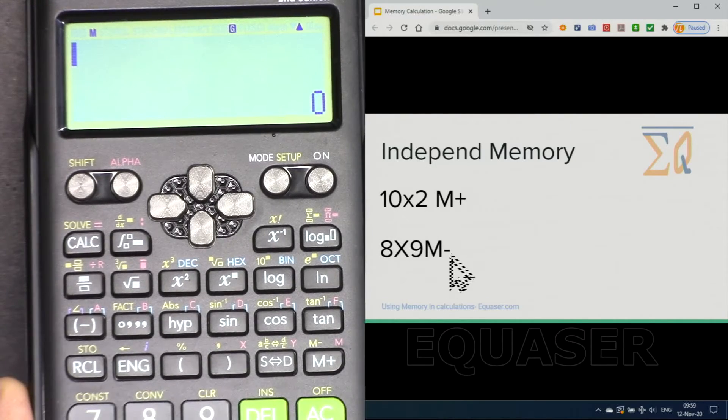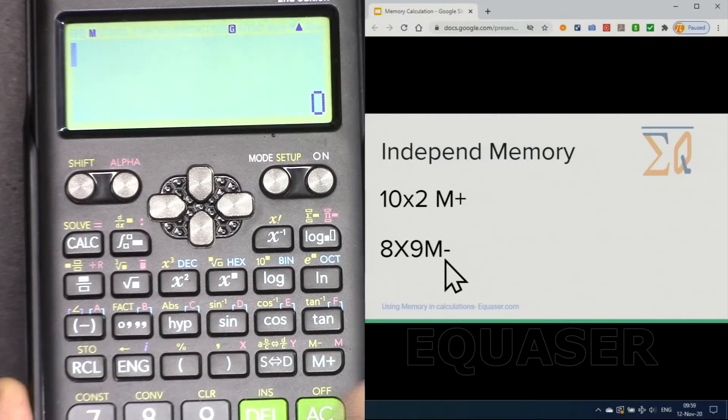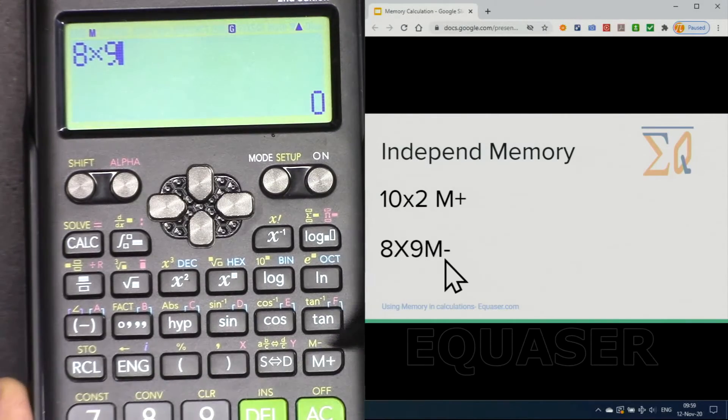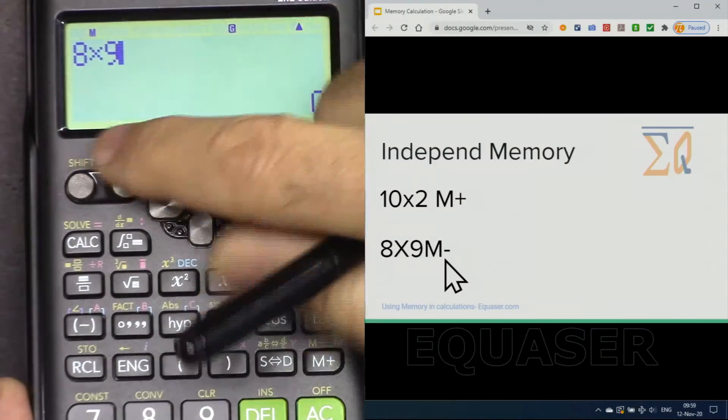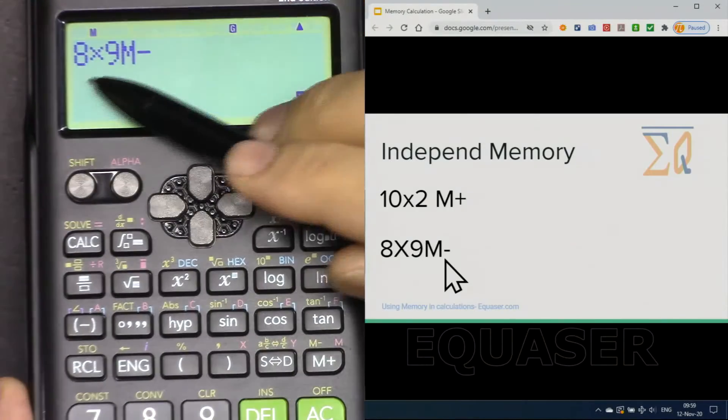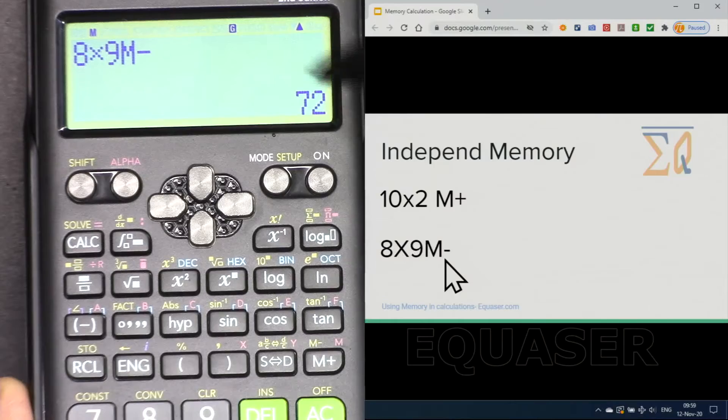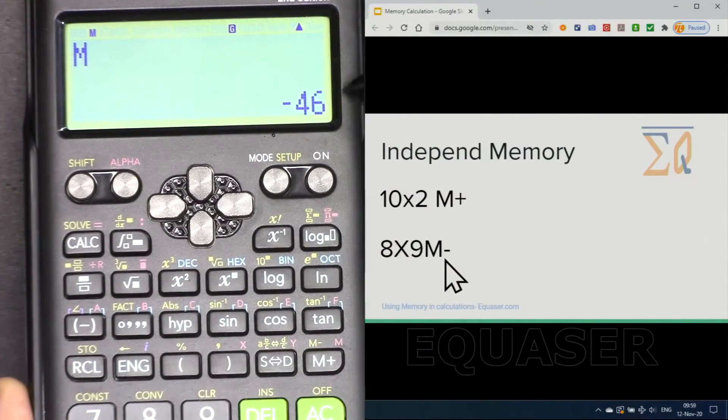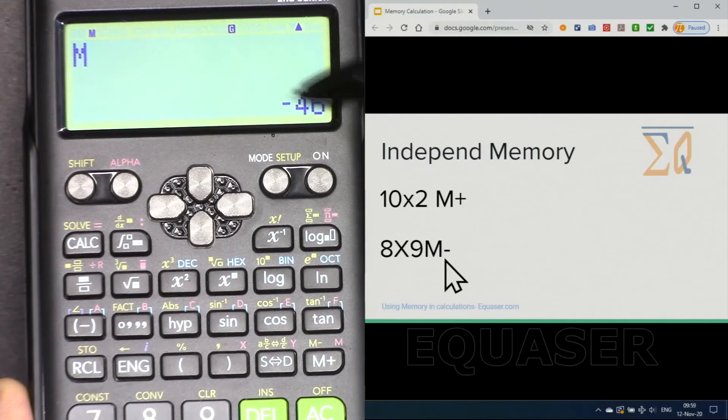To subtract we can do the same way, minus 8 times 9. Let's say you want to subtract 8 times 9 and then for subtraction M minus we have to press shift M and M minus so 72 have been subtracted from whatever value we had. Let's check it recall M and it is minus 46 because the value was small.